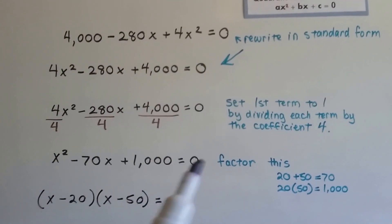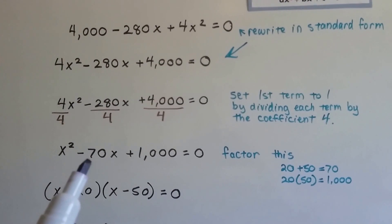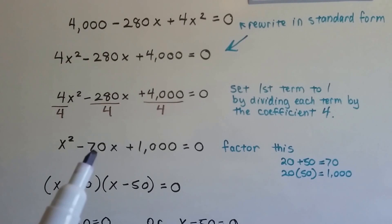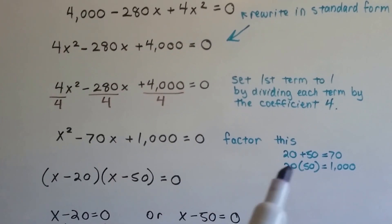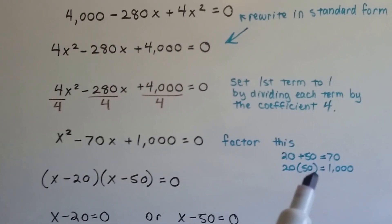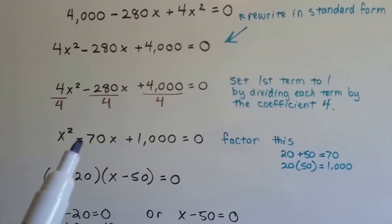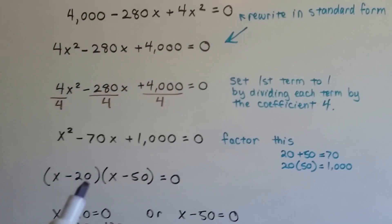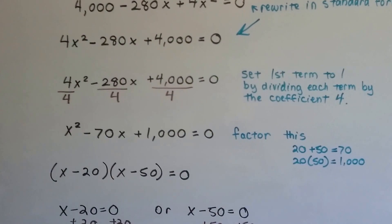We need to factor this trinomial. We need to find numbers that when added together equal the coefficient of x, and when multiplied equal this constant. 20 plus 50 works because that makes 70, and 20 times 50 is 1000. Because we have a minus here, we get x minus 20 times x minus 50, and we set it as equals zero.